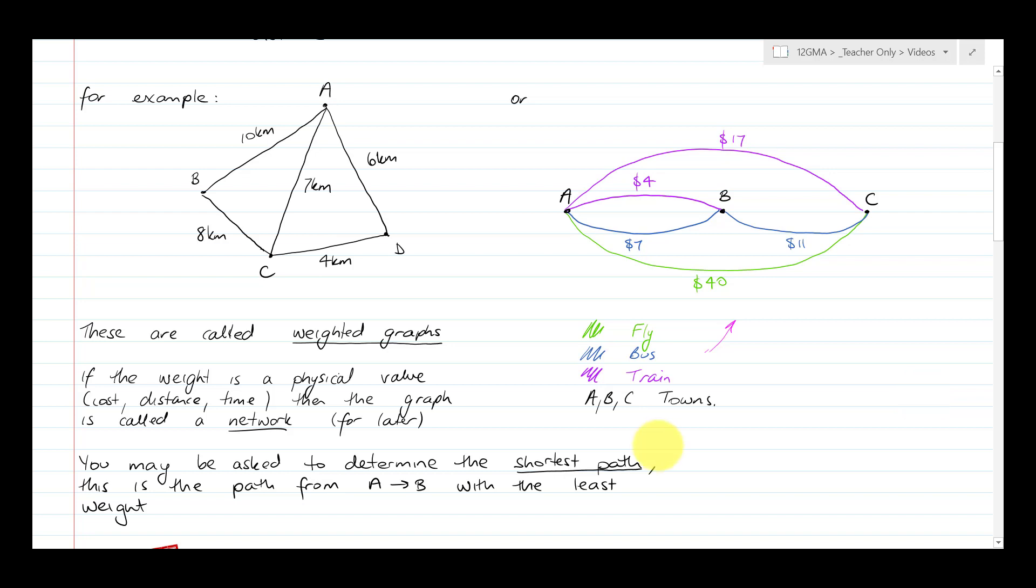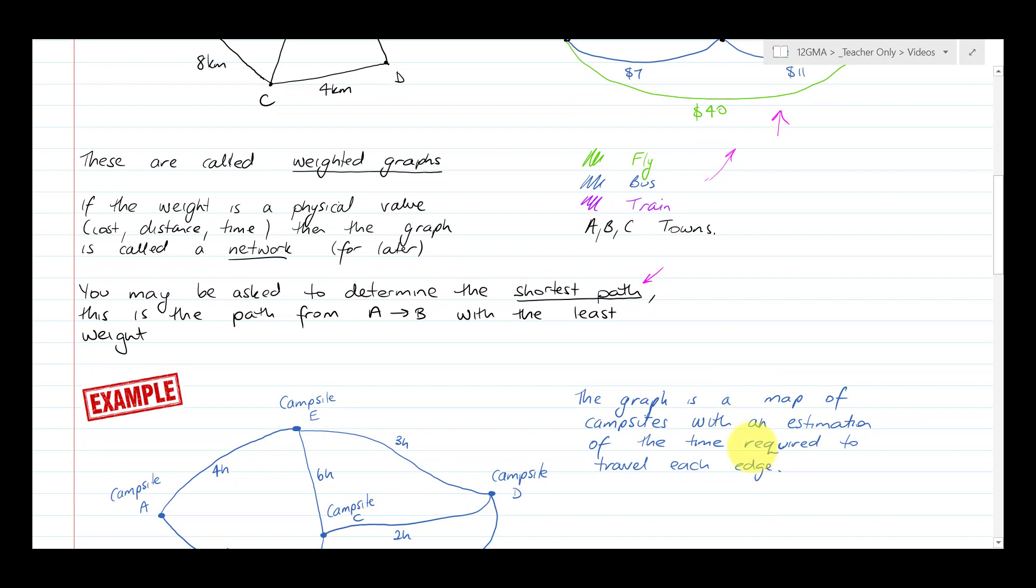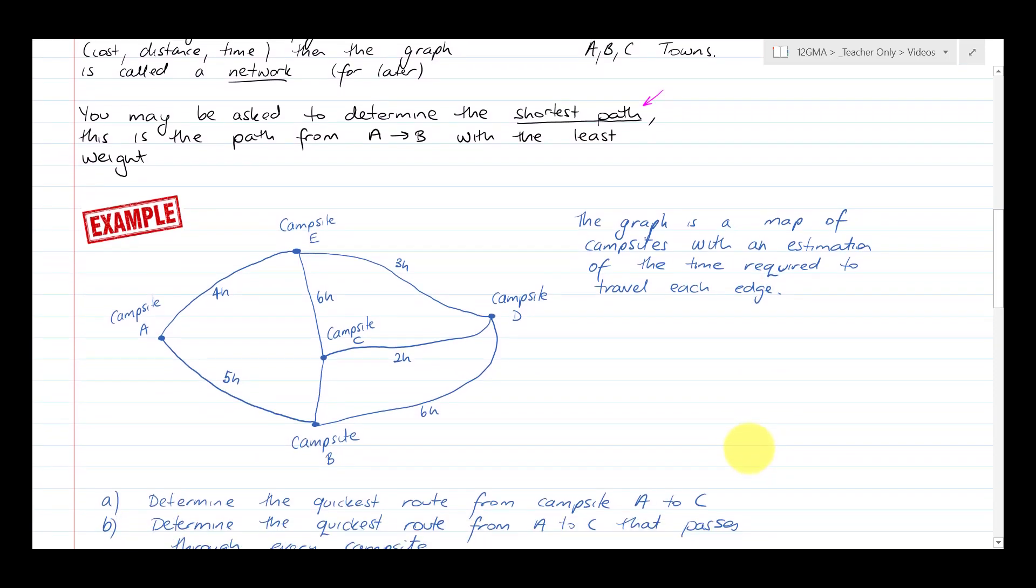You may be asked to find the shortest path or perhaps the cheapest route. You might be asked to find the cheapest trail or path. And if it's a traveler problem, that Hamiltonian exercise, find the cheapest way for a door-to-door salesman to go from A to B to C and back home again.